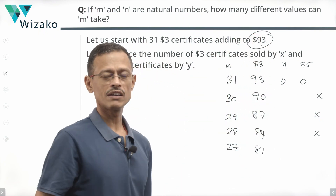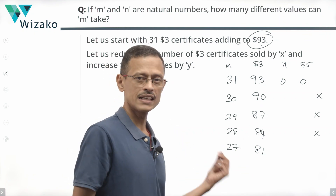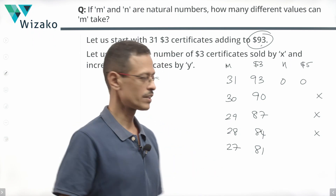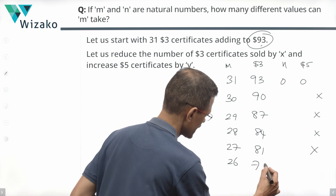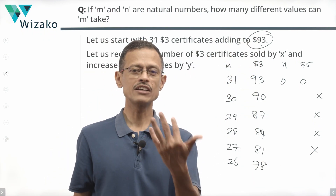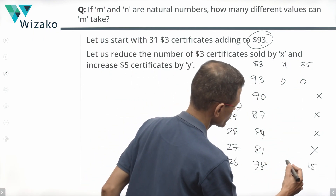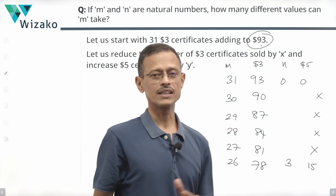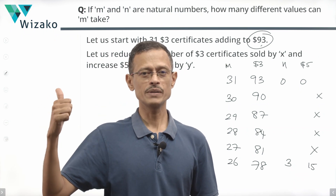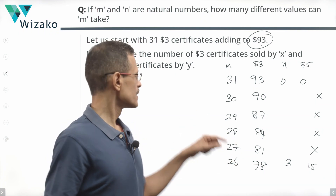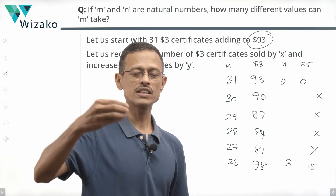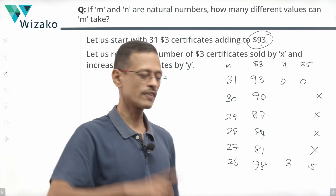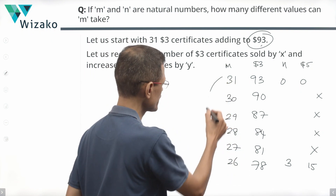So 31 was not a possibility (N = 0). Reducing by 1 each time from 30, 29, 28, 27 did not work because the amount released was not a multiple of 5. The first working case was M = 26, where we had to reduce M by 5. Let's define: reducing $3-certificates by x, and increasing $5-certificates by y. The money released equals 3x, and the money used for $5-certificates is 5y. So 3x = 5y.